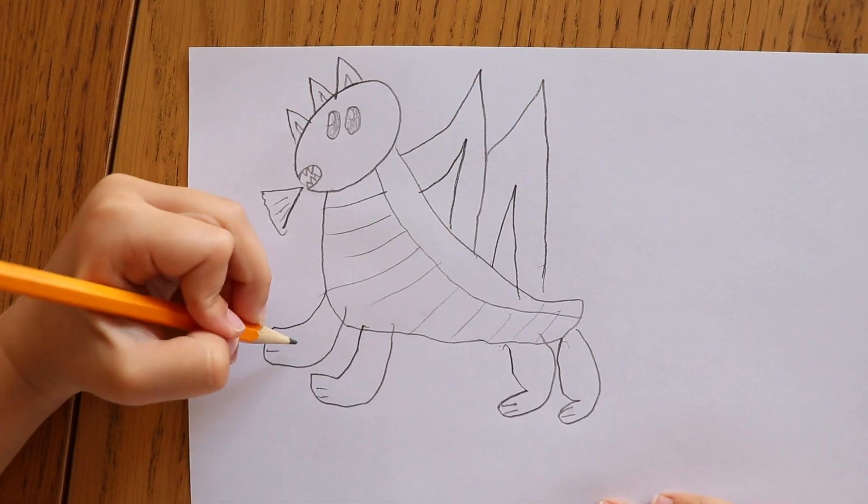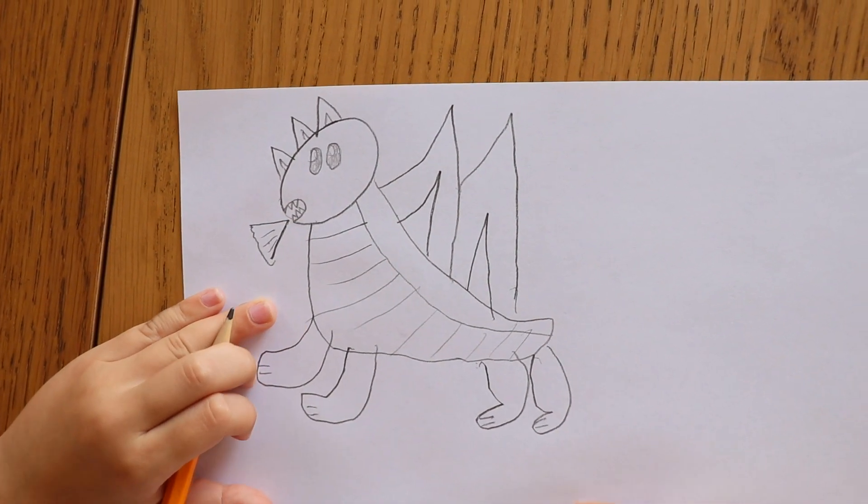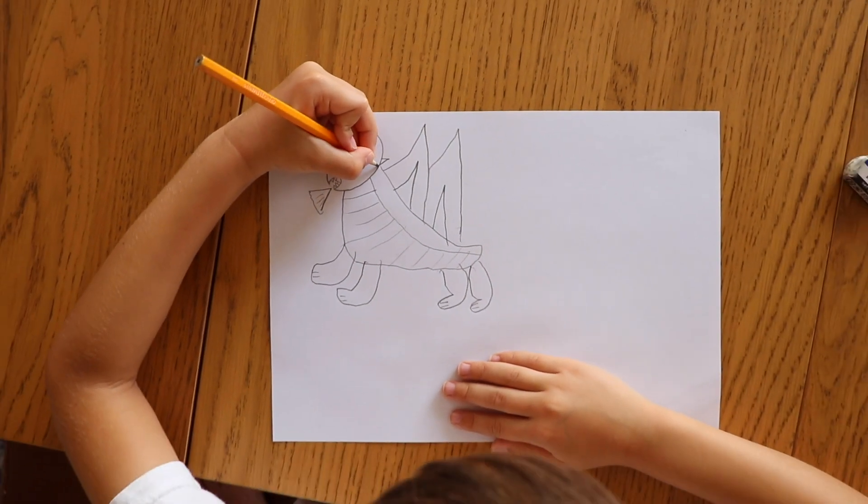And this one looks like going out, this one looks like in. And draw a triangle again. And draw spikes.